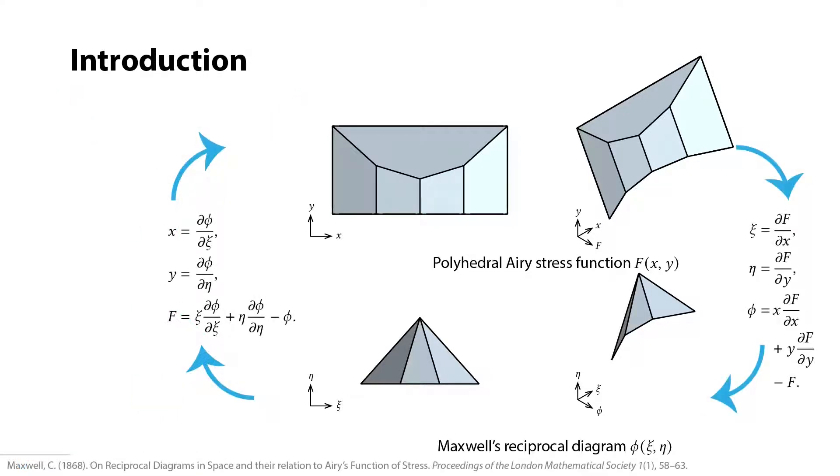This feature can be checked by Maxwell's reciprocal diagram, in which the slopes of a face in x and y direction turn into the coordination of a point in the xi and eta dimension, and vice versa.